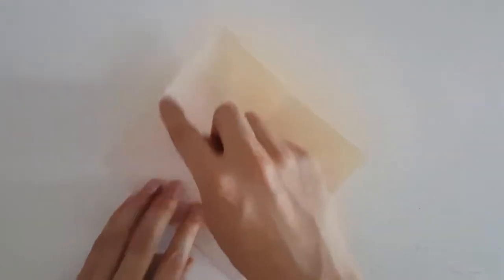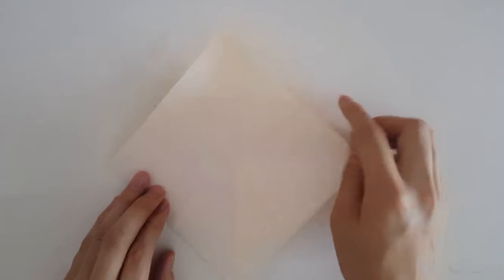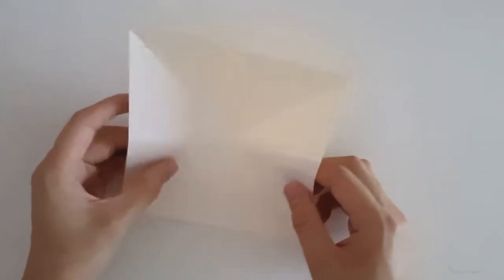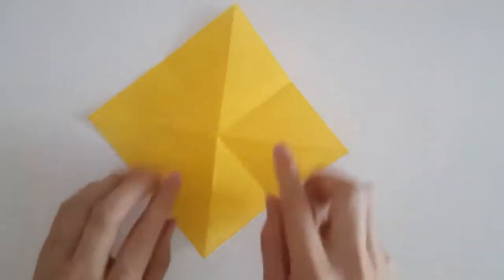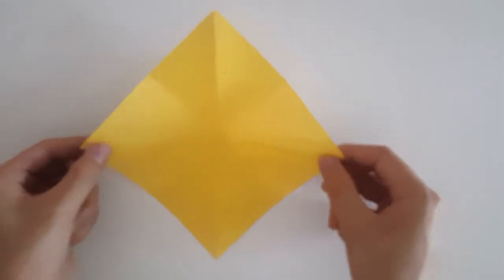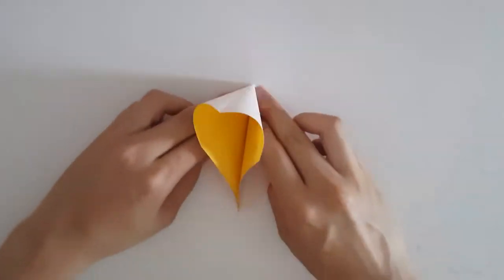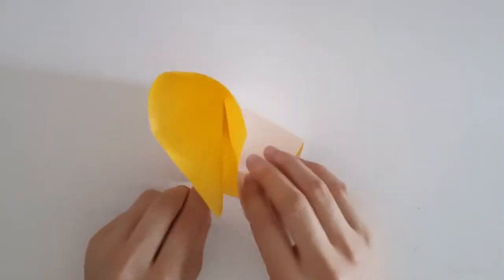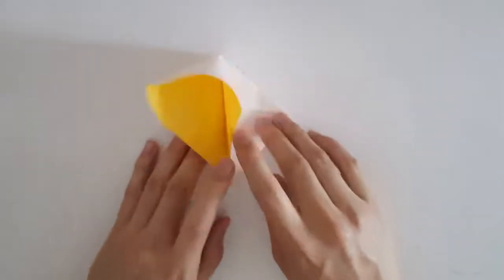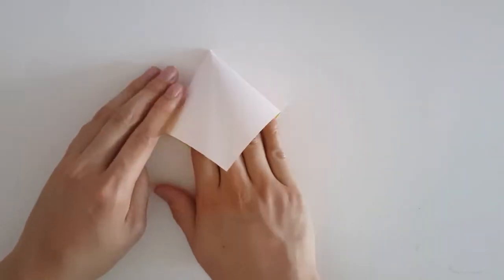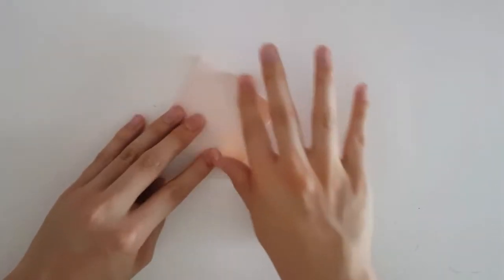Great. Now what we're going to do is we're going to kind of collapse all of this into one small square. So just going to pop the middle, and we're going to bring them all together. So the plain side, the side without the color, should be on the outside, and it should all come together like so, following the creases we made before.